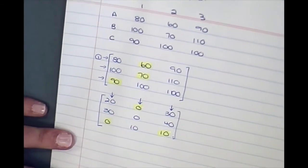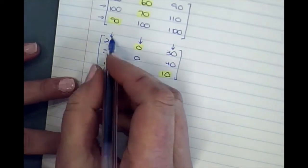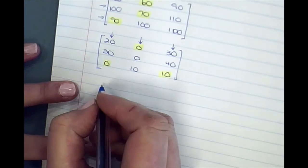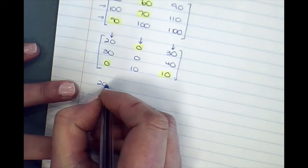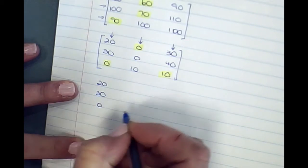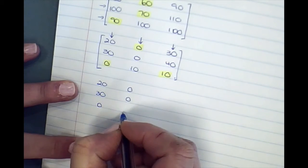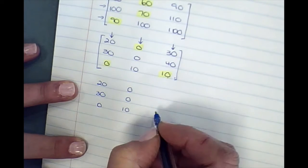We're going to subtract that number from all the numbers in the column. So column one remains unchanged, column two remains unchanged. Column three, we're subtracting 10.